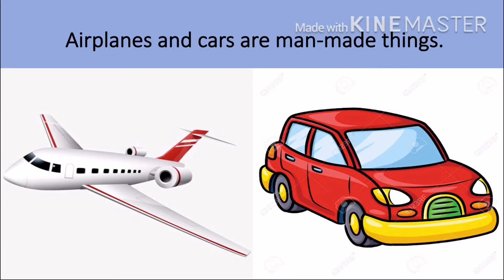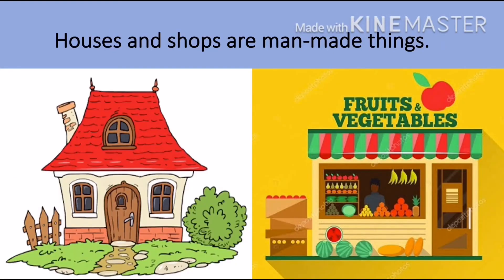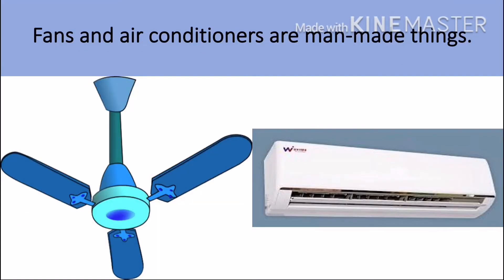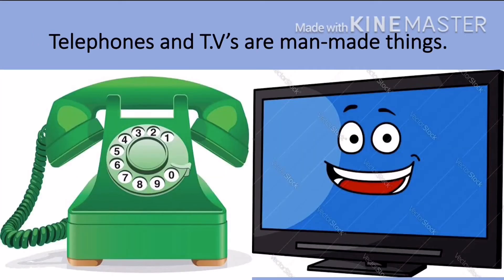Airplanes and cars are also man-made things because they have been made by man. Houses and shops are also man-made things because they have been made by human beings. The fans and the air conditioners that we have in our houses are also man-made things. Telephones and televisions are also made by man, hence known as man-made things.